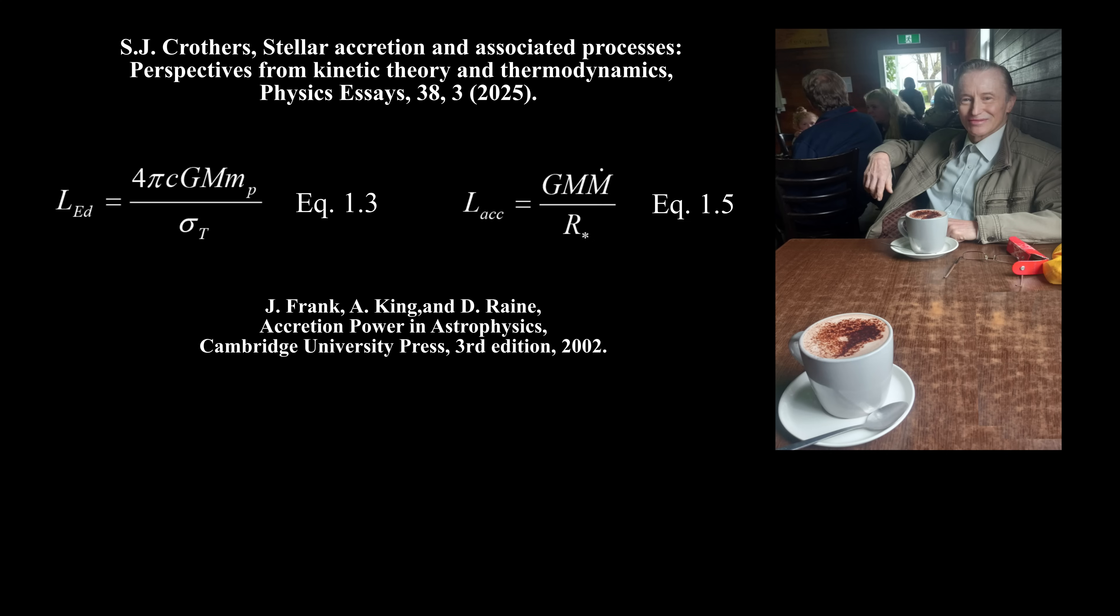By the Stefan-Boltzmann law, luminosity divided by surface area is intensive. Consequently, the Eddington limit and the accretion luminosity equation are both invalid. Nevertheless, these luminosities are equated to obtain an accretion rate given by this equation. This equation is invalid owing to the invalidity of the luminosity equations.